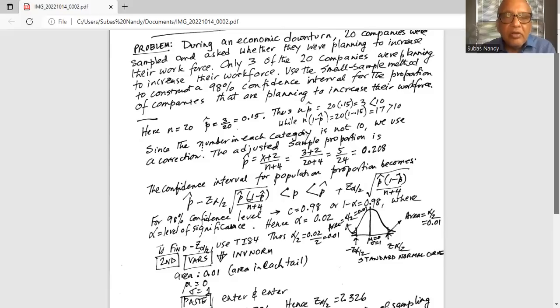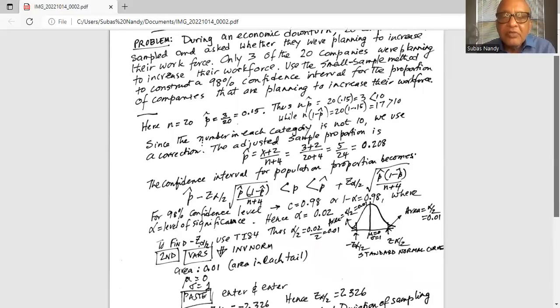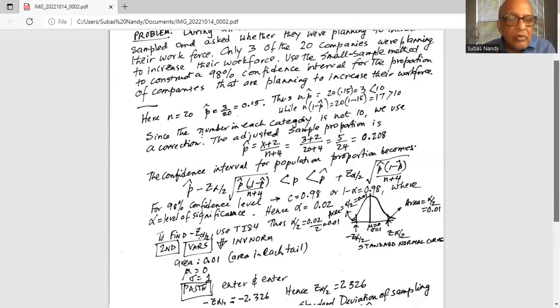Now we have to find out the 98% confidence interval for the population proportion. So our c level is 0.98, where c stands for confidence level. If c is 0.98, then 1 minus alpha is 0.98, where alpha is the level of significance. This is the maximum probability of rejecting the null hypothesis when it is true, the maximum probability of making a wrong decision. So solving 1 minus alpha equals 0.98, alpha is 0.02.